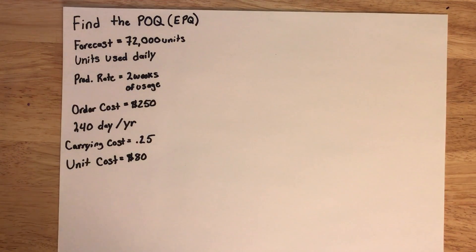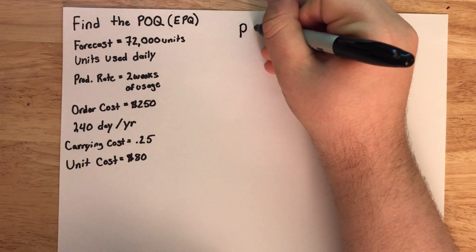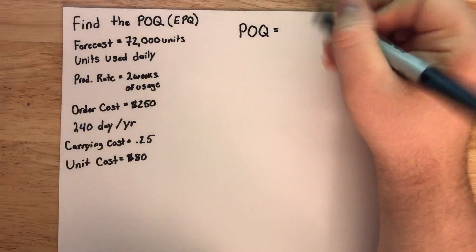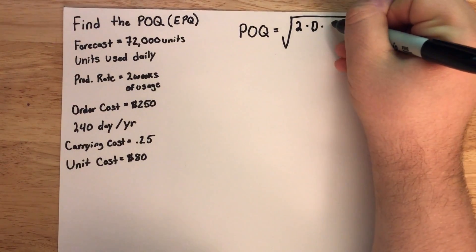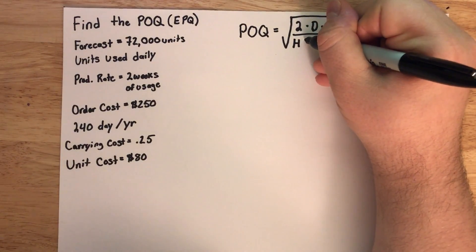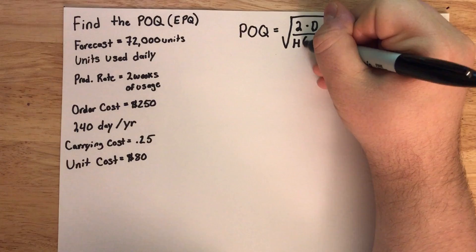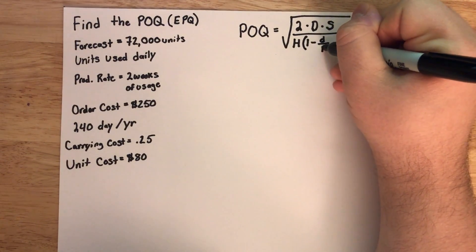Knowing all of that, we need to transform some of this information into the variables that we will use. The first thing is to identify which equation we are using. We are using a production order quantity instead of the EOQ, so we will be using the POQ equation. The POQ equation is defined as the square root of 2 times the yearly demand times the ordering cost per order, divided by the holding cost per unit per year times 1 minus the daily demand (lowercase d) divided by the production rate (P).